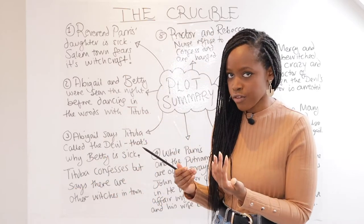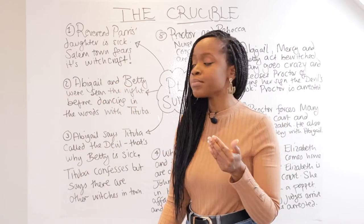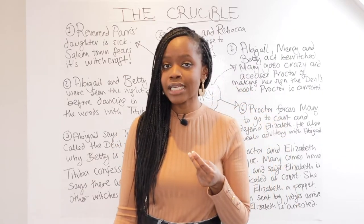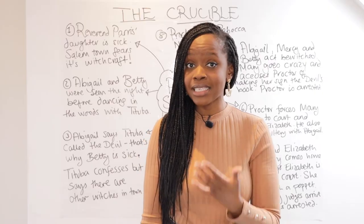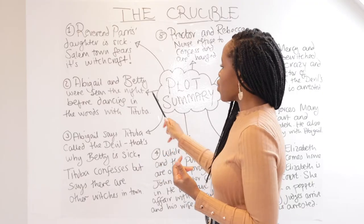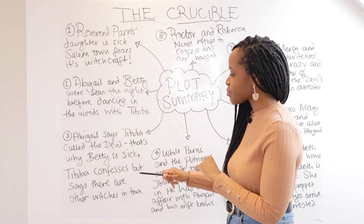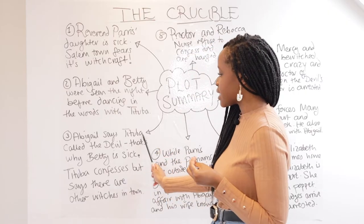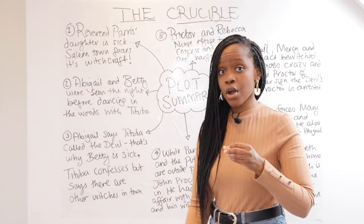As the play progresses, we learn that Abigail and Betty were seen by Reverend Parris himself the night before, dancing in the woods with Tituba. Tituba is the only Black character in this play — she is the slave of Reverend Parris. We learn that Abigail and Betty are somehow connected with Betty's sickness. When questioned, Abigail says that Tituba called on the devil that night and that is why Betty is sick.